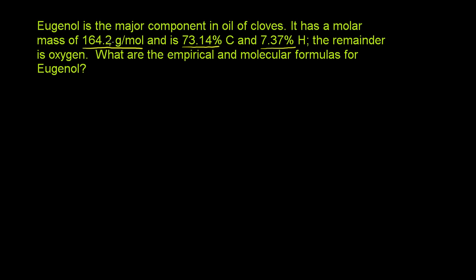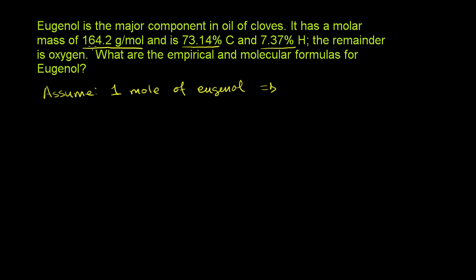The first piece of information given is that the molar mass of eugenol is 164.2 grams per mole. To simplify things, let's assume we have one mole of eugenol. A mole is just a huge number — like saying we have a million molecules, but even bigger. Since we have one mole, that gives us a mass of 164.2 grams of eugenol.